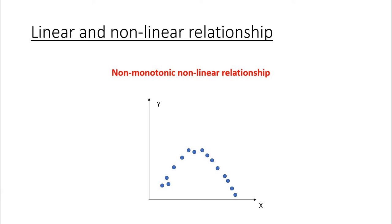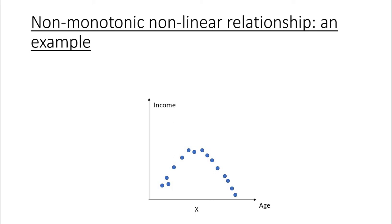If you wonder whether there are any two variables which might be described by this kind of relationship, a canonical example is the relationship between age and income. When you are relatively young and inexperienced, your income increases together with your age. Then you reach a certain age X, and your income starts to decrease as you become older, less productive, and have difficulty keeping up with additional training and learning new skills. That's why this relationship is non-monotonic — it will be described by this kind of inverted U-shaped relationship.